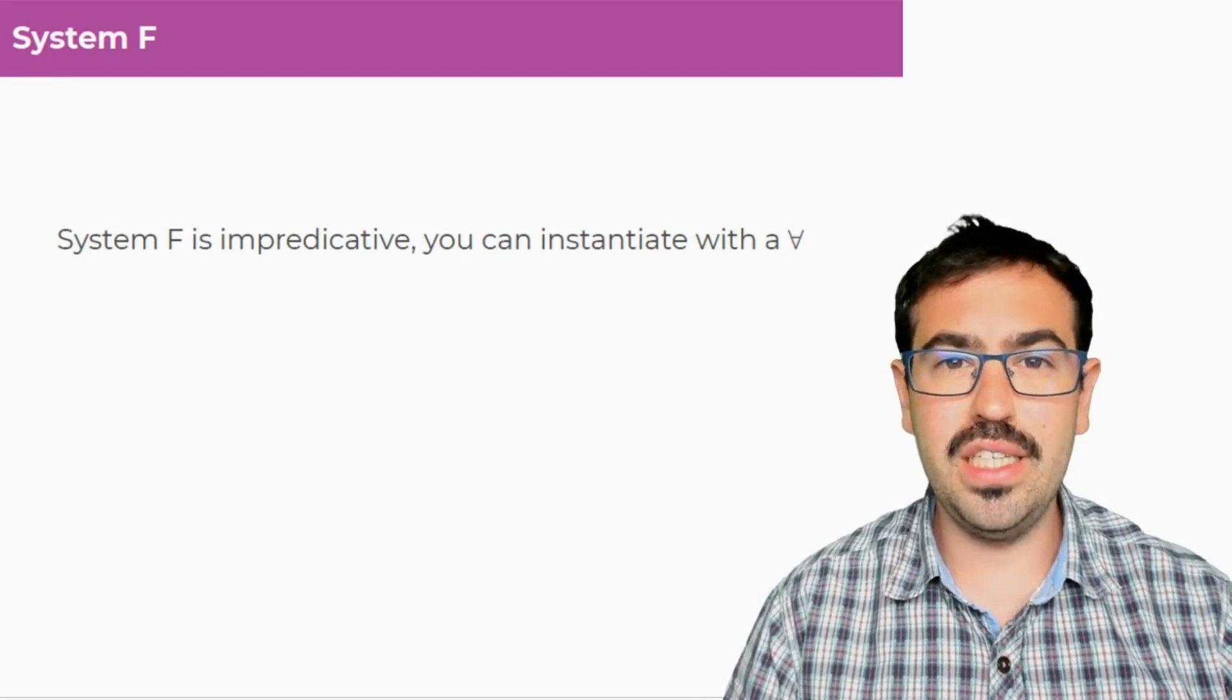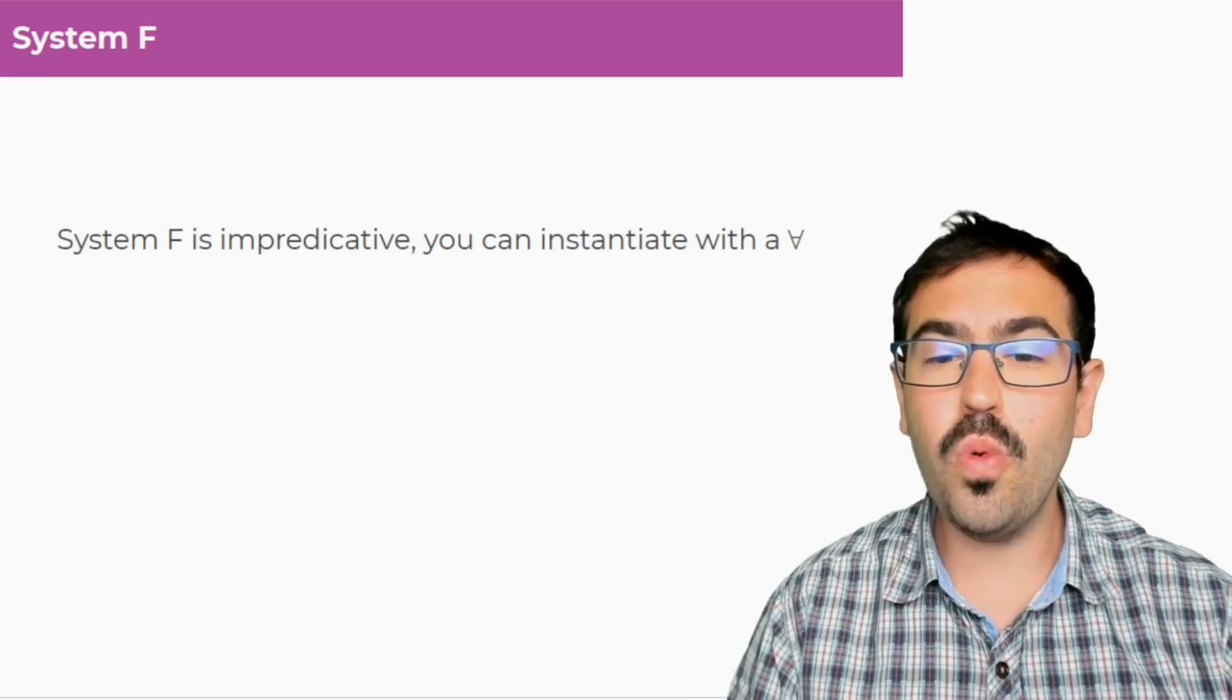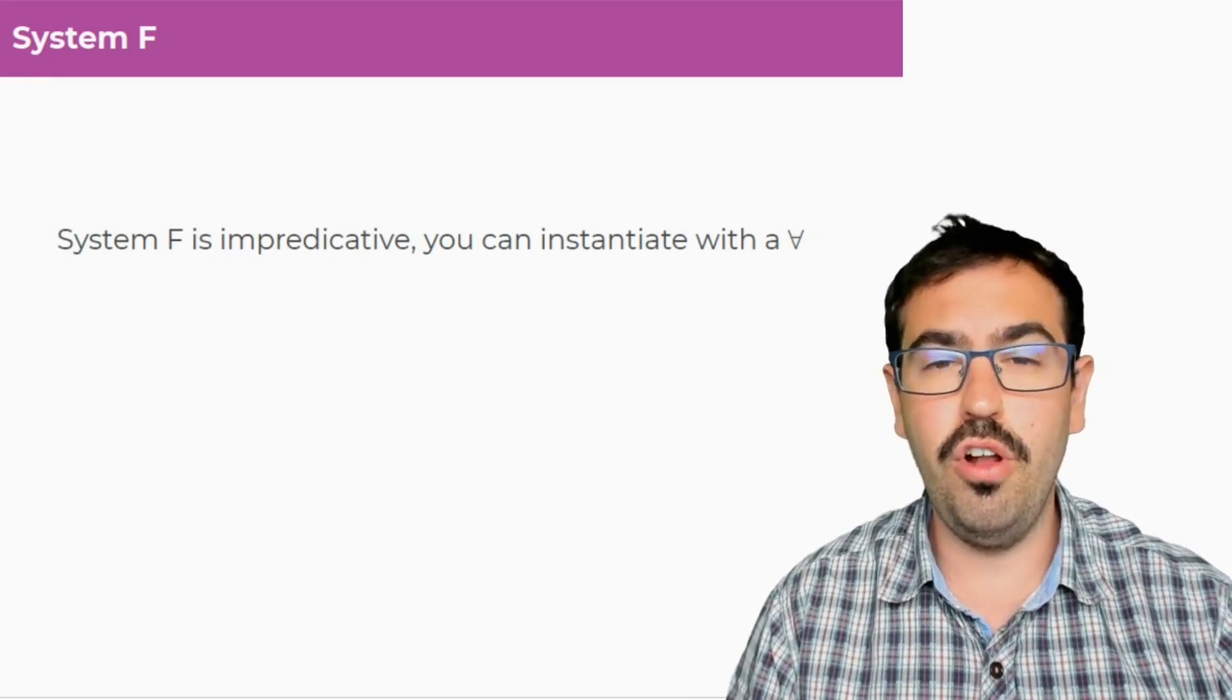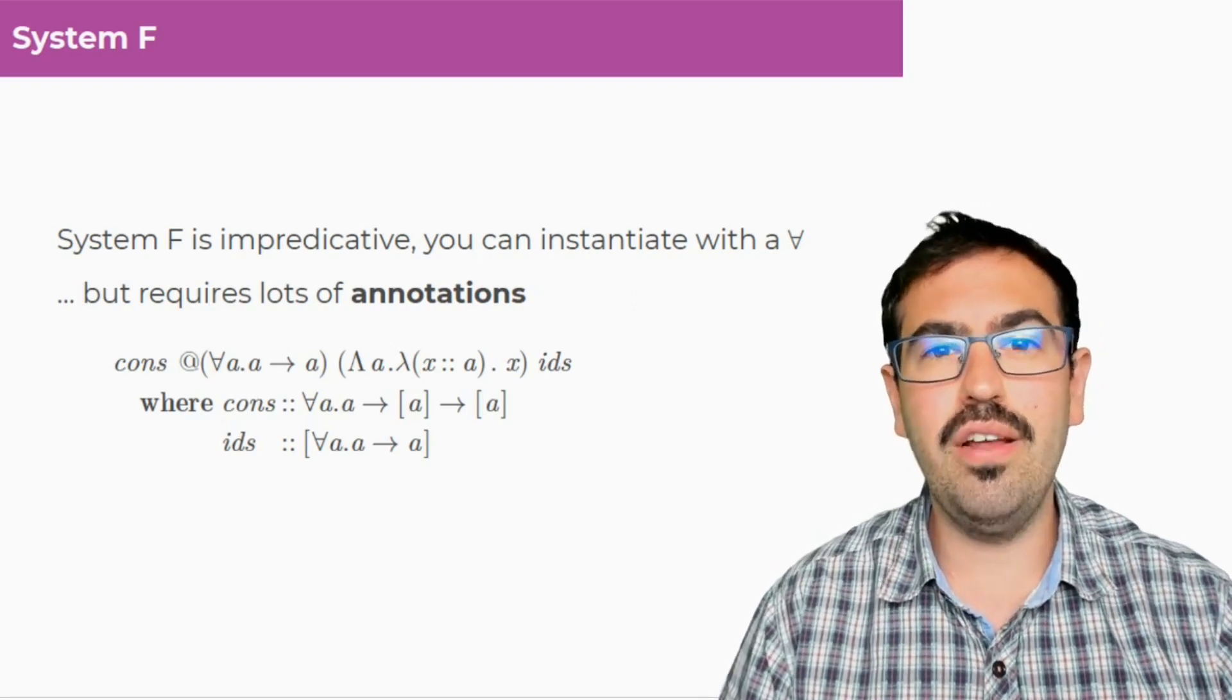System F, which is the basis for GHC core, is itself impredicative. You can always instantiate with a for all type. But you have to be very explicit about it. You need to annotate.